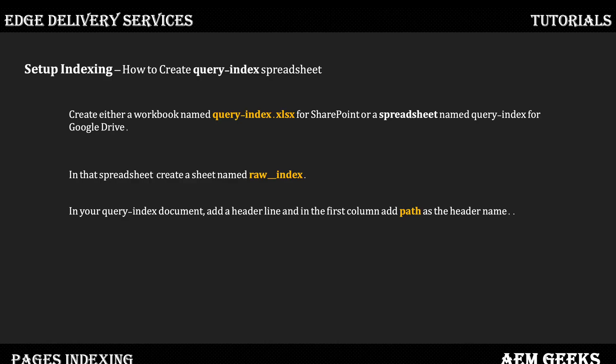Now you have to add the name of properties in the header — the name of the properties in each column in the first row. The first column is mandatory: you have to add a property called 'path', meaning you have to add a header called 'path'. This is mandatory. The rest of the properties you can add based on your requirement.